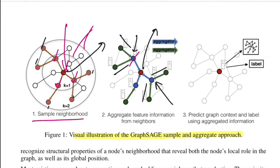All these blue and red colored nodes have an aggregator function attached to them, which defines how you want to merge the incoming information. There are various methods to define the aggregator function, but clearly that function should be order invariant — meaning if I give this node first or this node first, that should not matter. Some simple options you can think of are mean or sum.